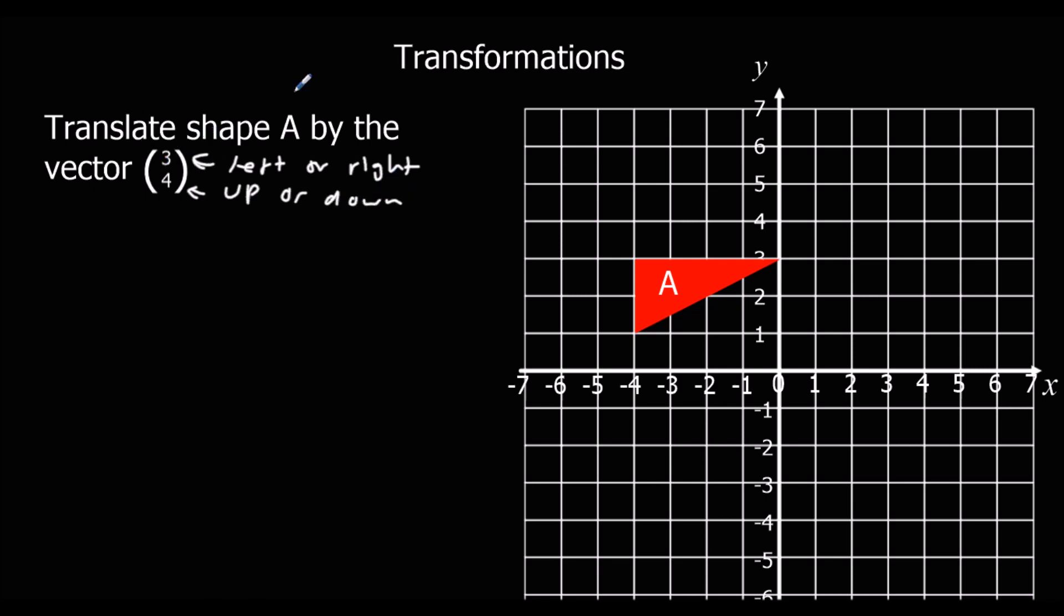So if it's a positive number, it goes to the right and a positive number here goes up. A negative number goes left or down. So this one goes 3 right, 4 up. So we have to move the shape 3 to the right and 4 up.